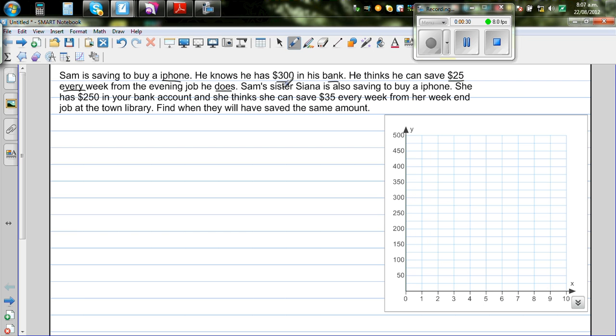Sam's sister Sienna also is saving to buy an iPhone. She has $250 in her bank account and she can save $35 every week from her weekend job at the town library. Find when they will have saved the same amount.